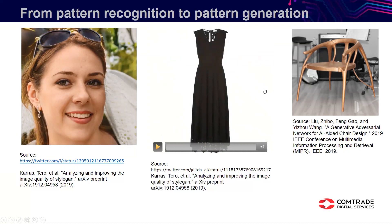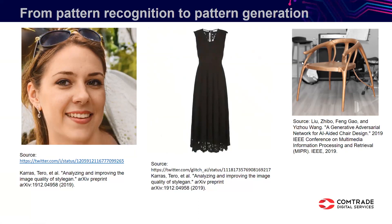There are a lot of potential use cases, especially in industrial design. Here I've shown an example of a chair that was generated by a model — they selected one and actually made a chair out of it. It doesn't look really comfortable to sit in, but it's a nice example. These are images generated based on what the networks have learned about some training set, but more interesting are use cases that generate an image based on some condition.